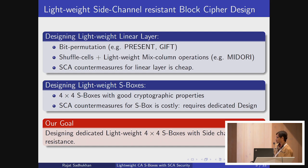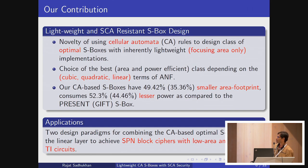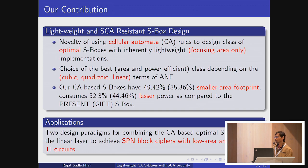Side-channel countermeasures require a dedicated design, and we try to address this issue in our work. Our goal is to design 4x4 S-boxes with side-channel resistance using cellular automata rules. We used cellular automata rules with a focus on area, and classified them based on the number of cubic, quadratic, and linear terms in the ANF. Using that, we have seen smaller area footprints — 49% and 35% — and lesser power consumption compared to PRESENT or GIFT S-boxes. We designed two design paradigms: one with bit permutation and another with almost MDS matrices.